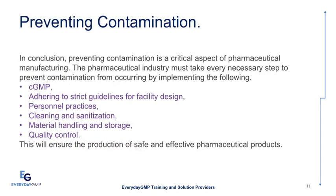Preventing contamination. In conclusion, preventing contamination is a critical aspect of pharmaceutical manufacturing. The pharmaceutical industry must take every necessary step to prevent contamination from occurring by implementing the following: cGMP, adhering to strict guidelines for facility design, personnel practices, cleaning and sanitization, material handling and storage, and quality control. This will ensure the production of safe and effective pharmaceutical products.